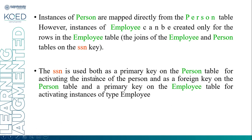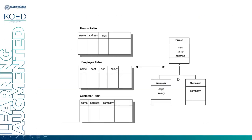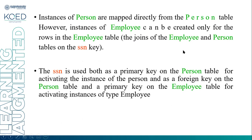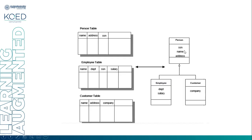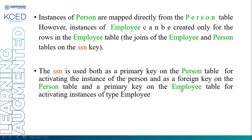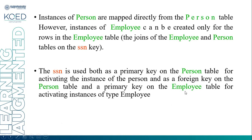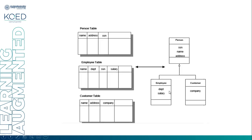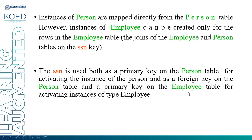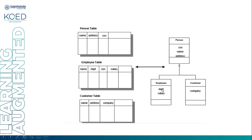The social security number is used as both the primary key in the person table and for activating the instance of the person. It is also a foreign key on the employee table and a primary key for the employee table for activating the instance of type employee. So, the primary key in the employee table acts as a foreign key in the person table for activating the instance of the employee.